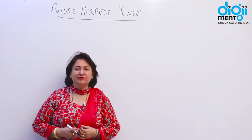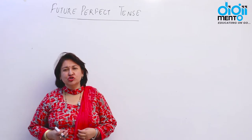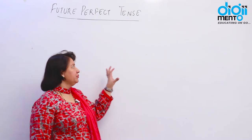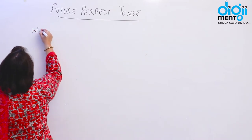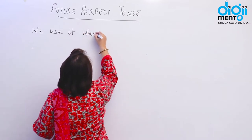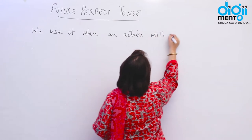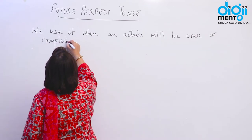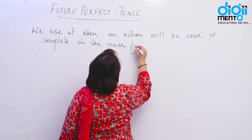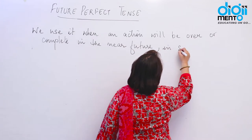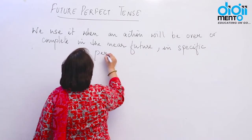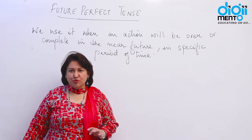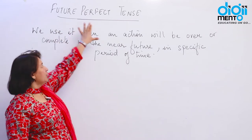First we talk about where we use future perfect tense. We use future perfect tense when we talk about the future in a specific period of time when your work will be finished — when an action will be over or complete in the near future at a specific period of time.